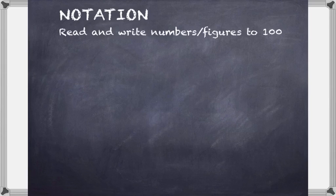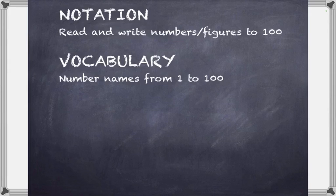Those are the main points of material we'll be covering. They fall into some major areas of study that are covered in the course. The first one is going to be notation, where we'll be reading and writing the numbers and figures to 100. Notation is going to be an important initial area that we'll be covering. Vocabulary will be the number names that we'll be learning from 1 to 100, learning the names for each individual number along the way.